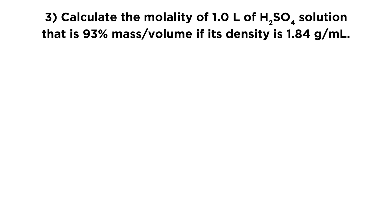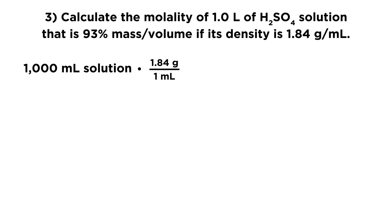For the third question, we're again looking for molality, but this time we're given a volume. We use the density to find the mass: 1 liter expressed as 1,000 milliliters, multiplied by 1.84 grams per milliliter, gives 1,840 grams — or 1.84 kilograms — of solution.